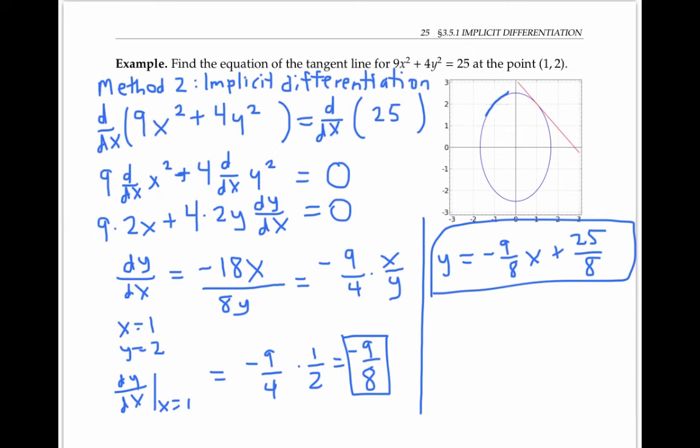In this example, implicit differentiation was a convenient way to find the derivative, but it was possible to solve for y and use standard methods instead. In many examples like the next one, however, it's not possible to solve for y directly, and so implicit differentiation is the only way to go.